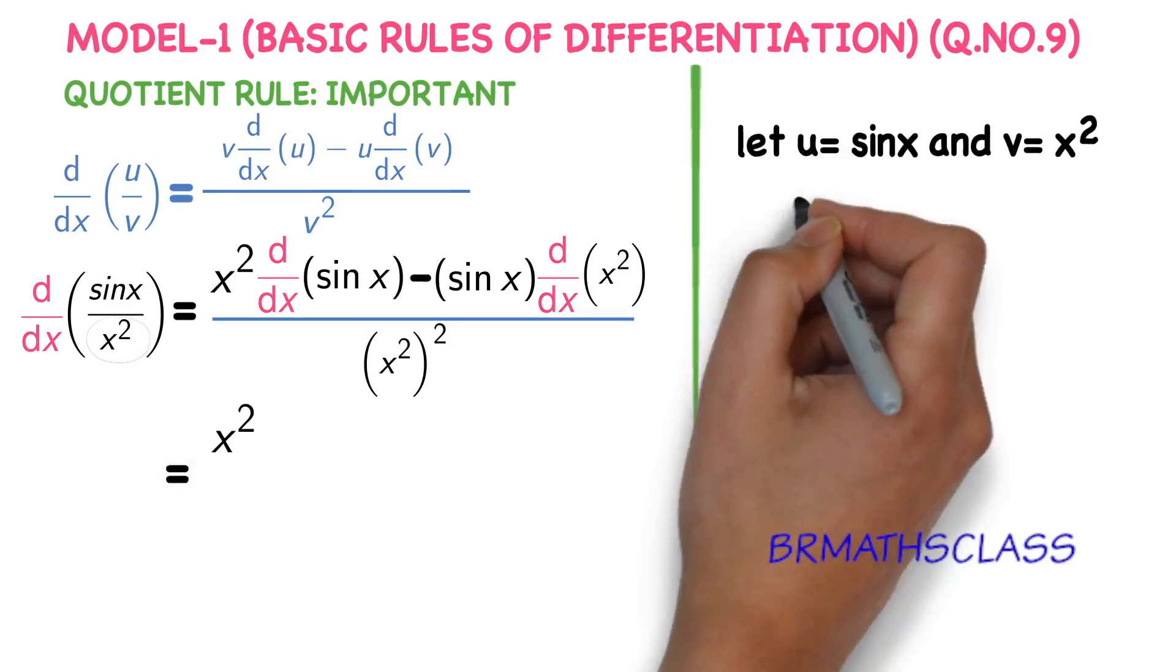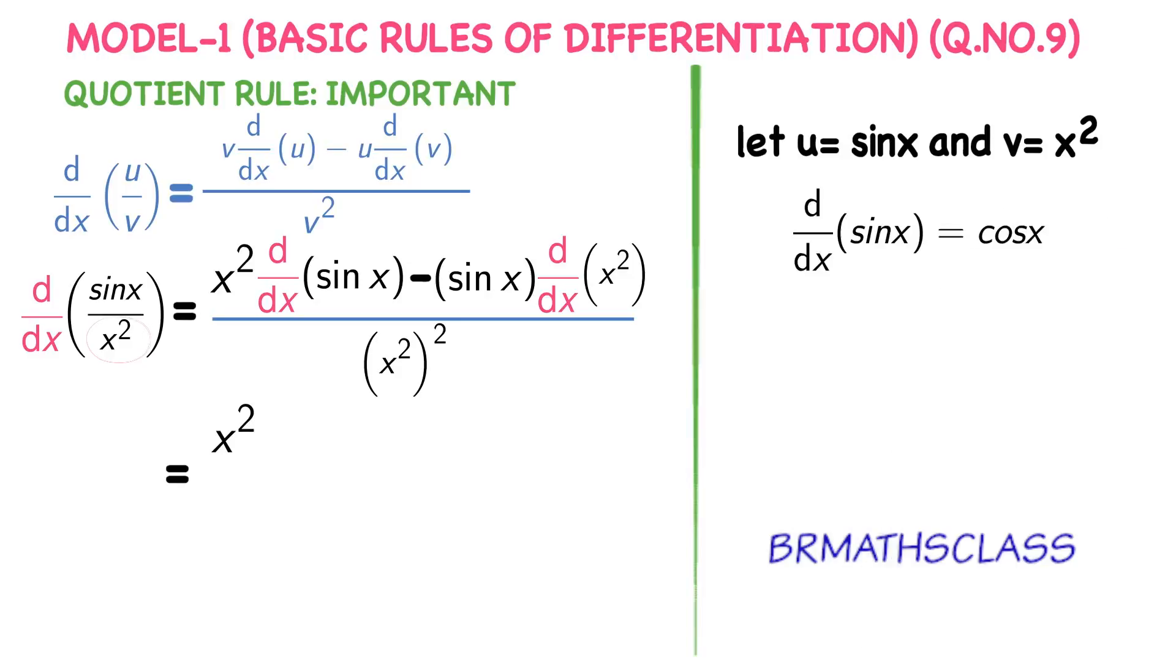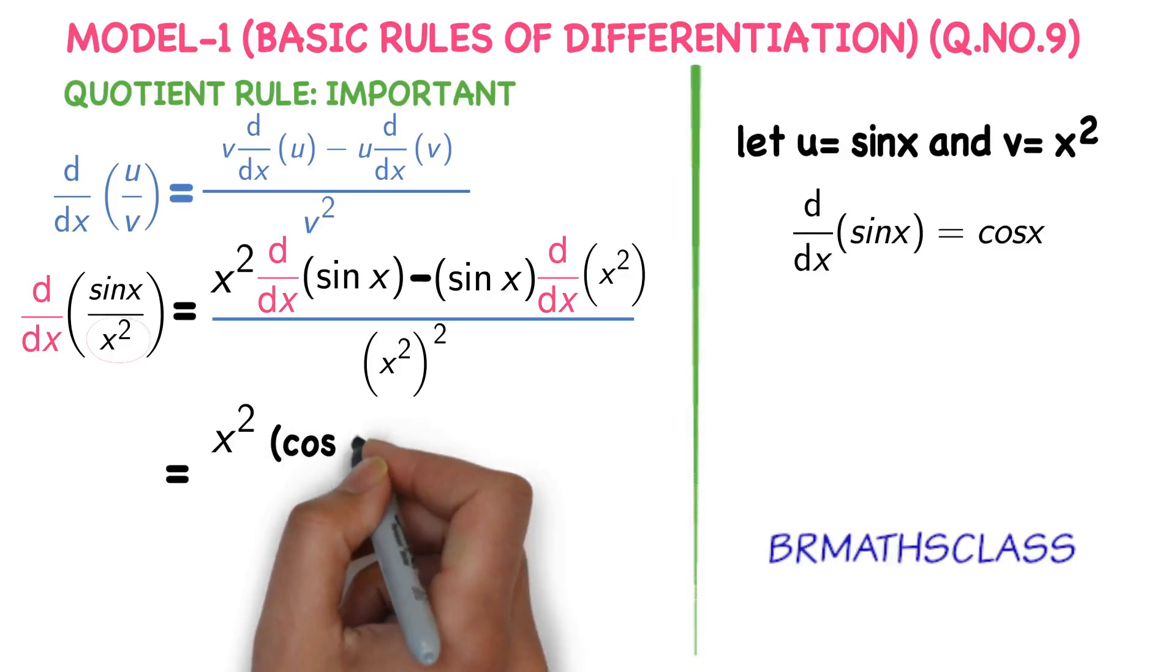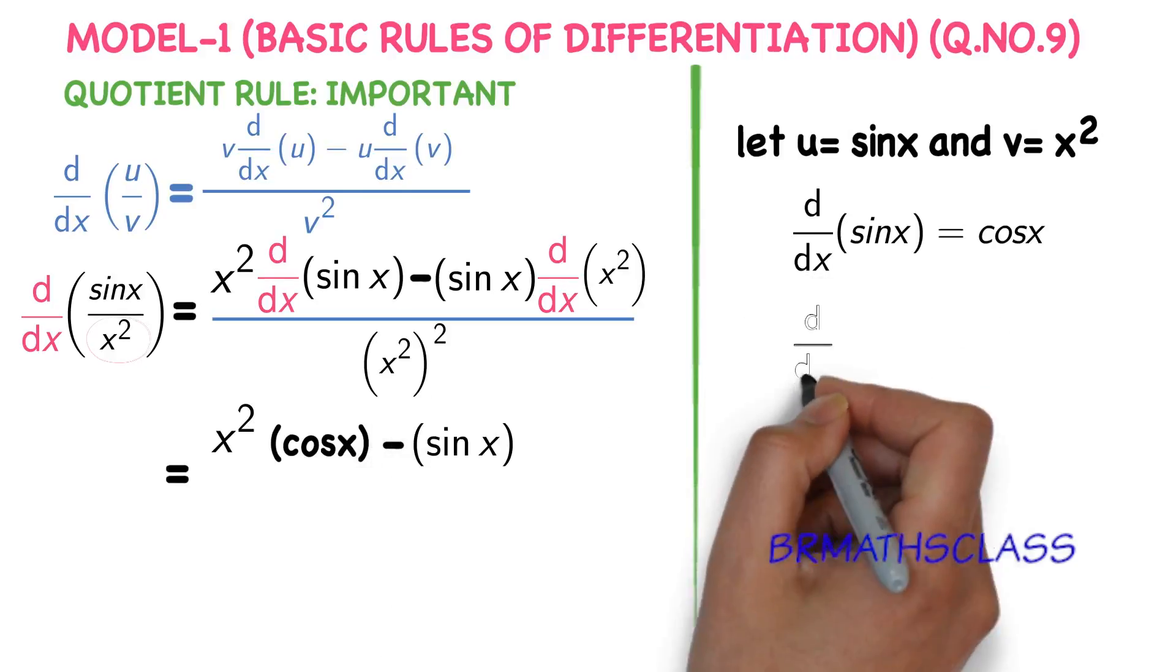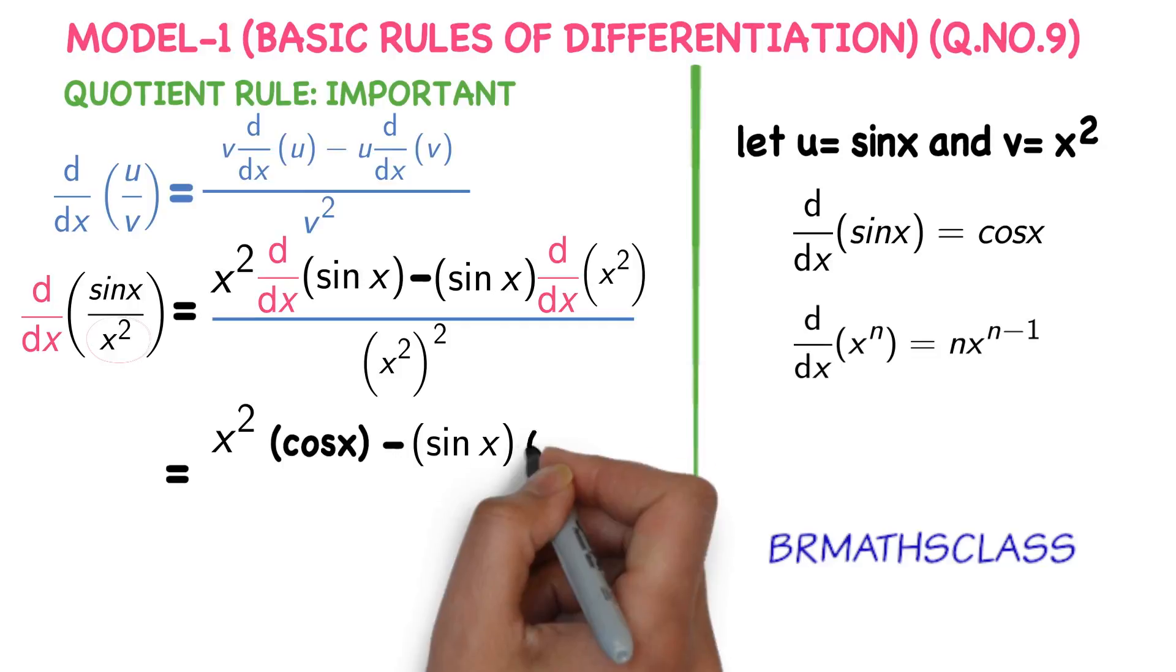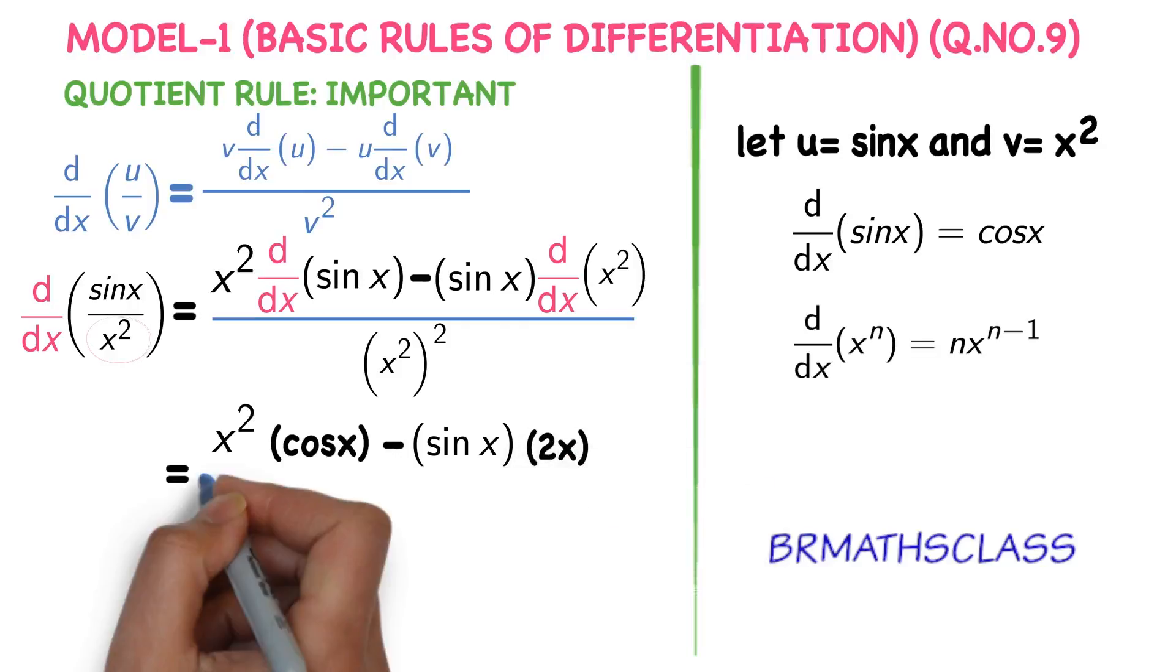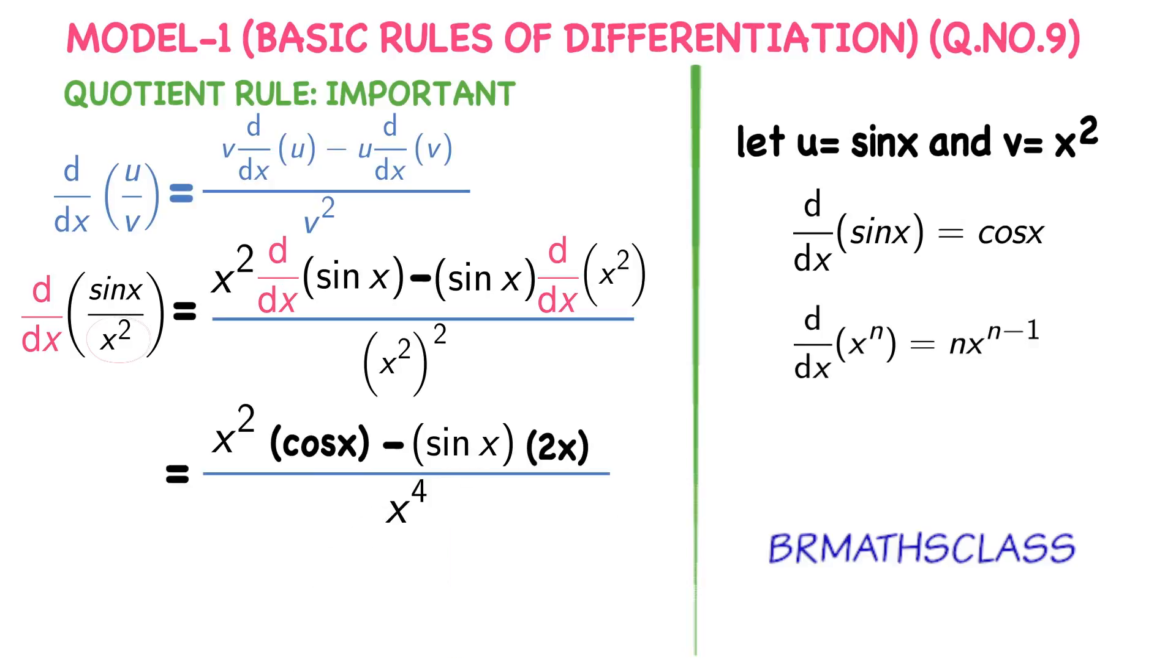x square into derivative of sin x. We know this formula. Derivative of sin x is cos x minus sin x into derivative of x square. Derivative of x power n is n into x power n minus 1. So derivative of x square is 2x divided by x power 4.